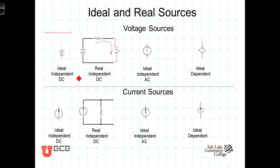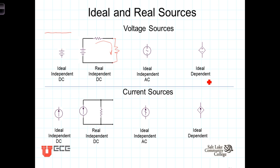And then, finally, we make the distinction between an independent source and a dependent source. A dependent source produces a voltage that depends upon some other voltage or current in the circuit. For example, if you have an iPod that's producing a very small voltage and you plug it into an amplifier, the output of the amplifier will be a scaled version of that small signal. The amplifier itself would be modeled as a dependent source, where the output is dependent upon the smaller voltage coming out of the iPod itself. Generally speaking, dependent sources will be used to model amplifiers and circuits that process signals in one way or another.